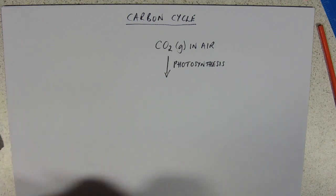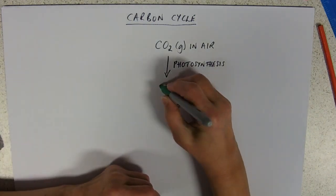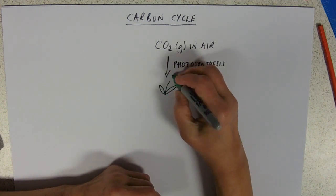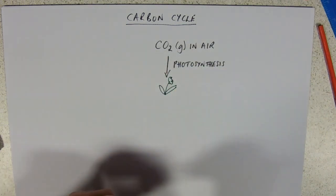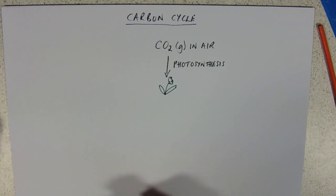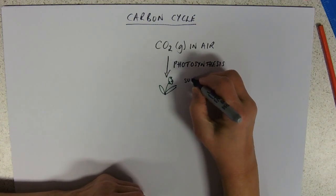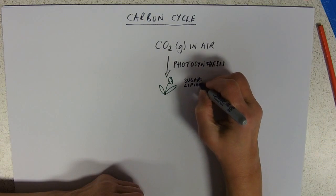And the organisms that are mainly doing that, excuse the quality of drawing, they'll tell you what it is, is a green plant. So, those carbon-containing compounds, so what plants are actually making are sugars, lipids, polysaccharides.